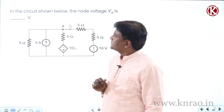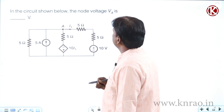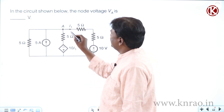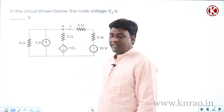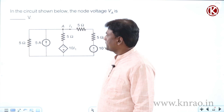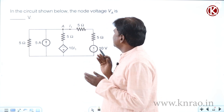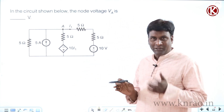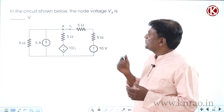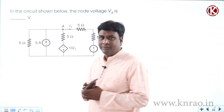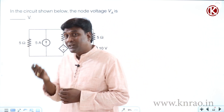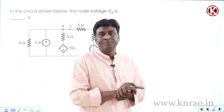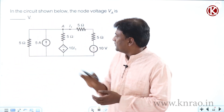Let's see this question. In the circuit shown below, the node voltage VA is being asked. The moment they ask VA, the output requirement is voltage — that's one advantage. Keep that aside for now.